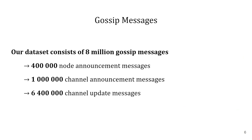We have collected around 8 million of these gossip messages, consisting of more than 400,000 node announcement messages which are propagated through the network by nodes to inform other participants either when a node is created or it updates its information. We have also collected over 1 million channel announcement messages, which are sent when a channel is created and contain information such as the short channel ID — a unique identifier for each channel — as well as both node IDs of the channel endpoints. Lastly, we have collected more than 6.4 million channel update messages which contain important channel parameters such as the fee-based parameter necessary for calculating routing fees.